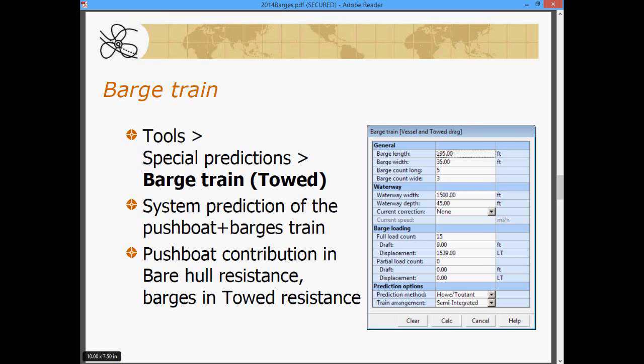Now, the barge loadings, we can enter two different load types. We can enter a full load and a partial load, and the total of the count will be equal to the rectangular equivalent of the number of the count long and the number wide. So, here we have a total of 15 fully loaded barges at 9 feet of draft and 1,539 long tons of displacement.